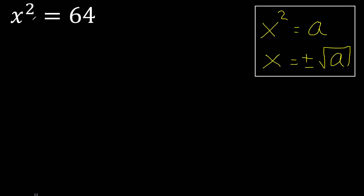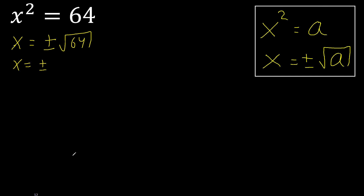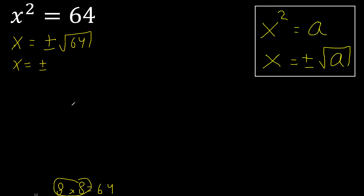Exponent 2 is even, therefore like this. 2 equals numbers that multiply to 64. 8 multiplied by 8 is 64. Equal — here 2 equal numbers, therefore equal 8.